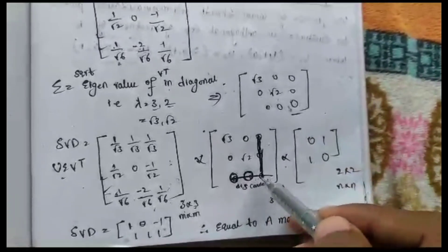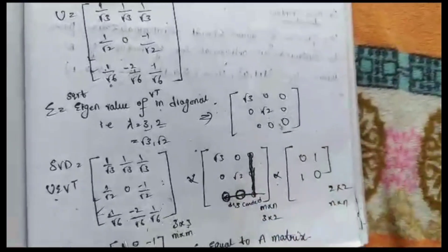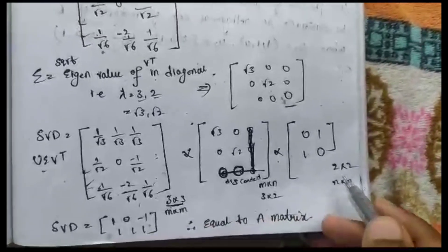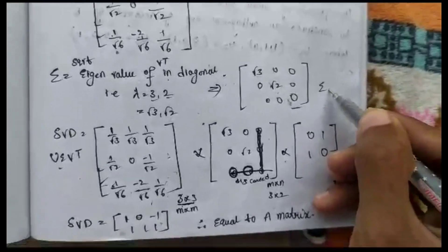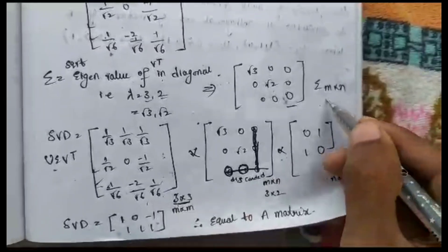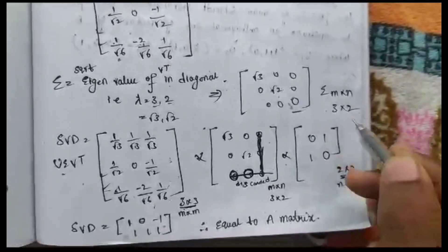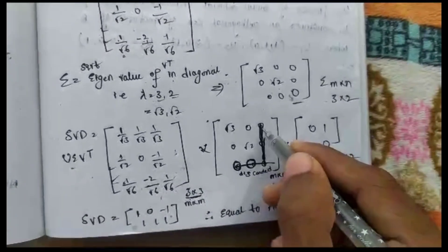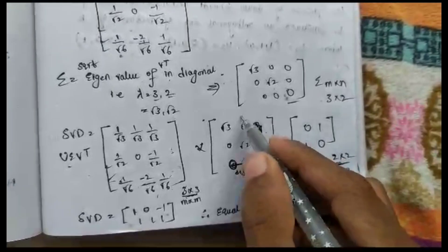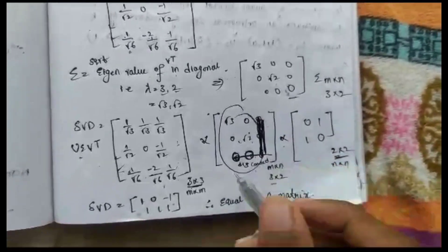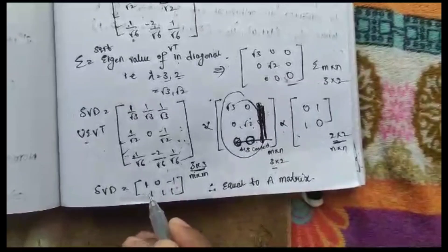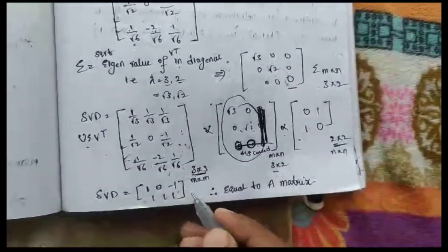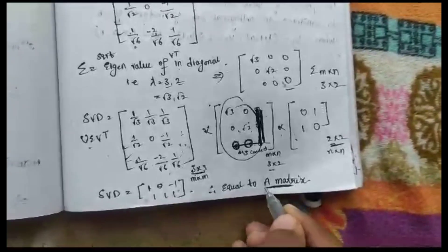The SVD is A = U·Σ·Vᵀ. The U matrix is 3×3: [[1/√3, 1/√2, 1/√6], [1/√3, 0, −2/√6], [1/√3, −1/√2, 1/√6]]. The Σ matrix is 3×2 (since m=3, n=2): [[√3, 0], [0, √2], [0, 0]]. The Vᵀ matrix is 2×2. Multiplying these three matrices in Casio gives back the original matrix A.